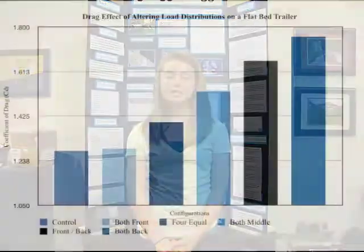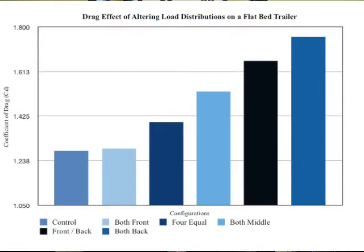The third portion of my experiment was testing flatbed load configurations on a flatbed tractor-trailer truck. I tested six different load configurations and found that the best configuration was the full front load, which produced the least amount of drag. However, if you have a heavy load, the next best thing is to equally distribute it along your flatbed trailer. If the load cannot be distributed, the next best thing is to place it in the middle of the flatbed trailer.